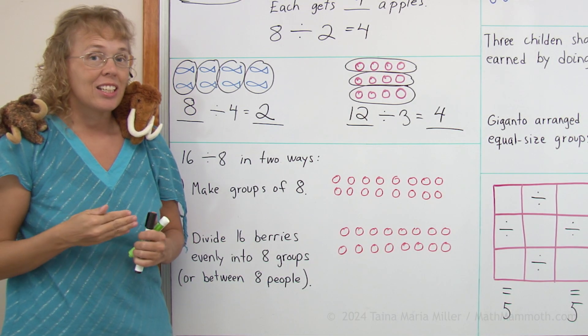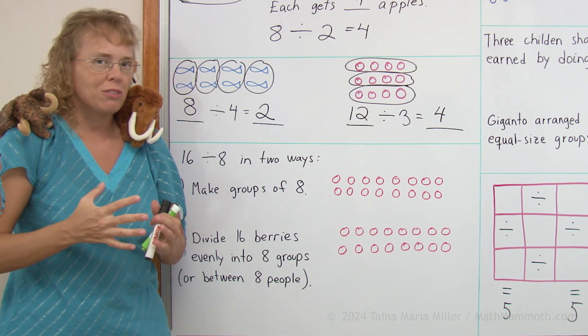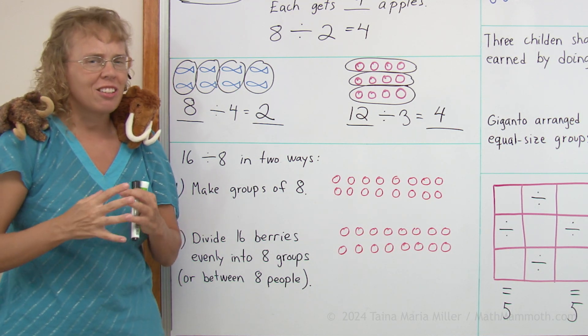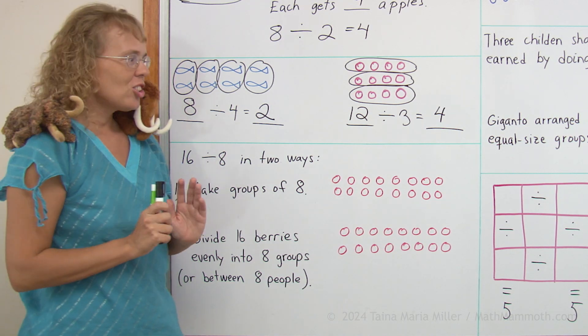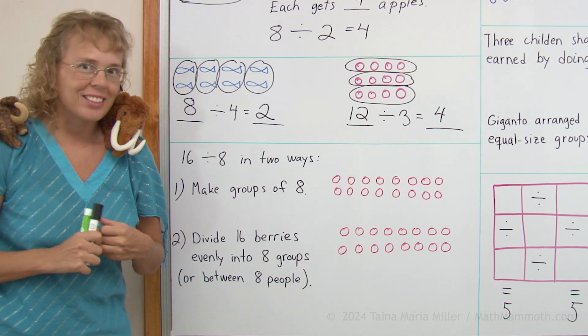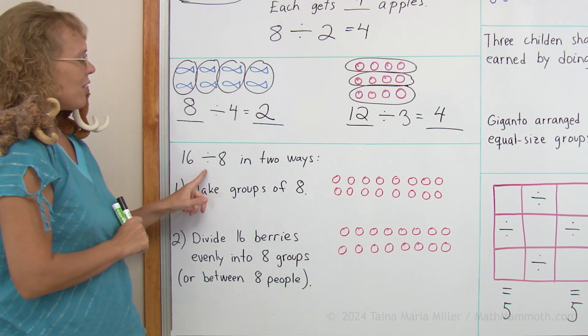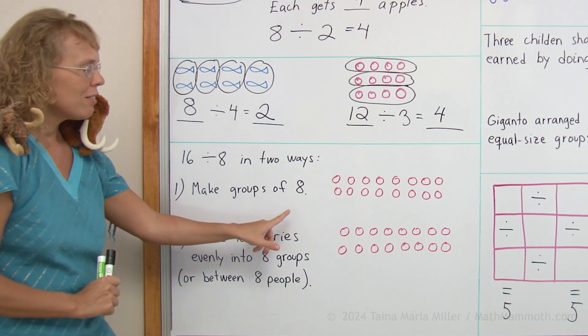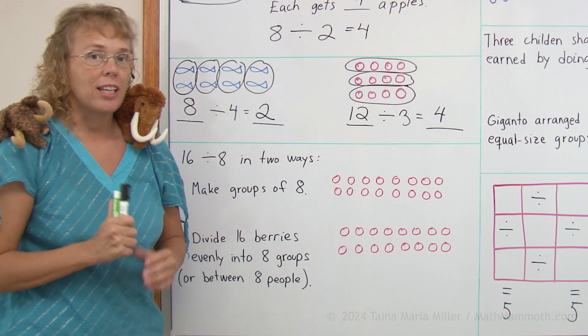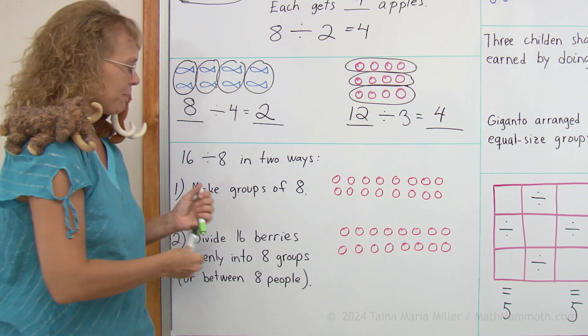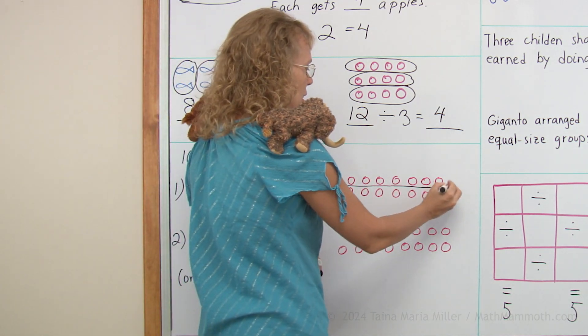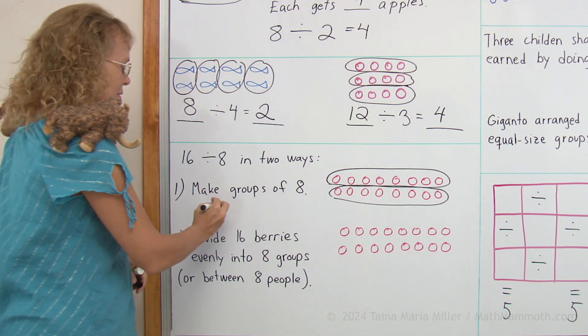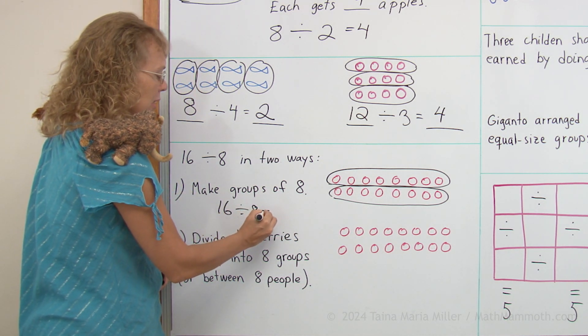We have already studied the meaning of division where we made groups of certain sizes. And now in this lesson I've shown you the sharing division where we share evenly. So for each division problem you can think of it in two different ways. For example, 16 divided by 8. One way to think about it is that you make groups of 8. You have 16 berries and you're going to make groups of 8. And you ask, how many groups will I get? So if I make groups of 8, there's 8 and there's 8. How many groups? 2 groups. And the division is 16 divided by 8 equals 2.